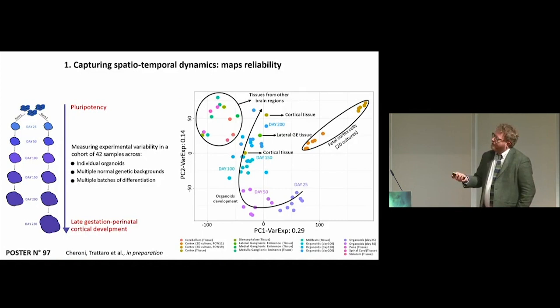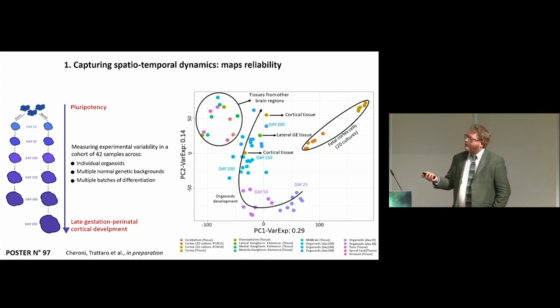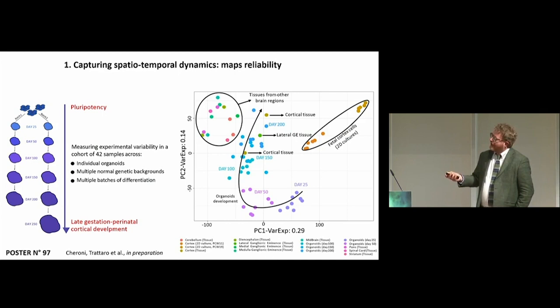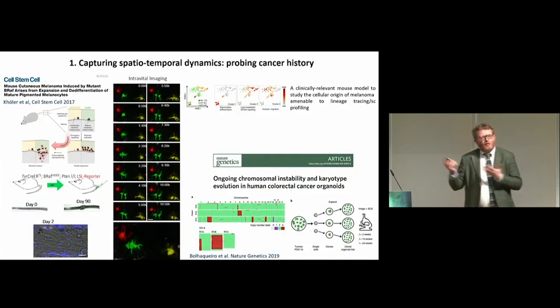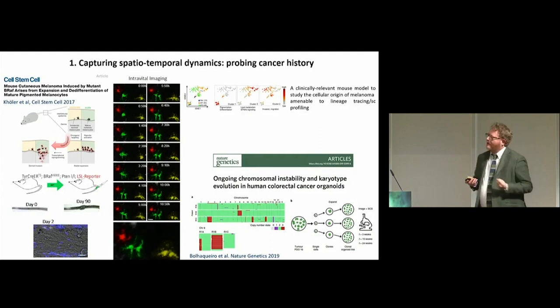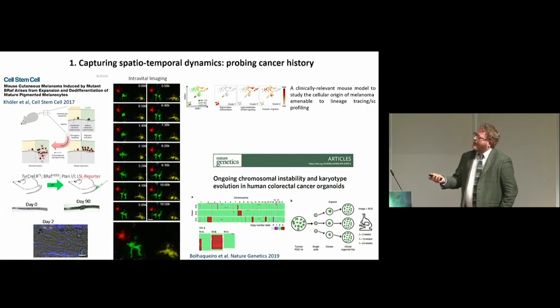We then asked what is the reliability of such maps, and measured variability across individual organoids, multiple normal genetic backgrounds, and multiple batches of differentiation. As you see here, as they progress through time, these brain organoids nicely match freshly isolated cortical tissue, which is quite distinct from traditional cultures of the very same cells. An analogous point can now be made for cancer in terms of this first key theme: capturing spatial-temporal dynamics.